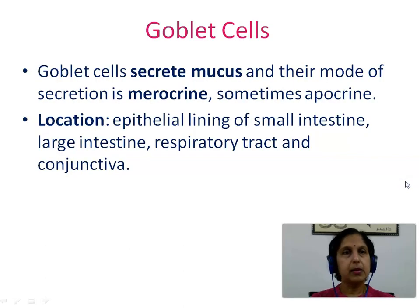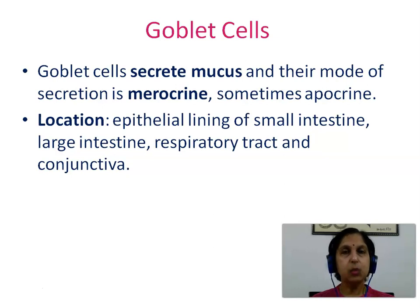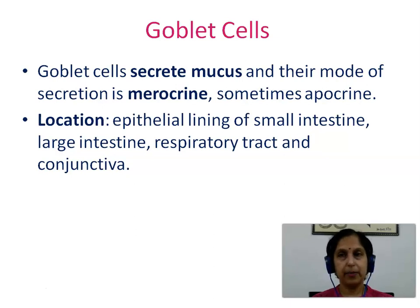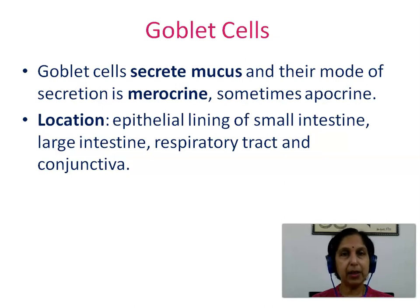Goblet cells are unicellular glands that secrete mucus, and their mode of secretion is merocrine, sometimes apocrine. They are located in the epithelial lining of the small intestine, large intestine, respiratory tract, and the conjunctiva.